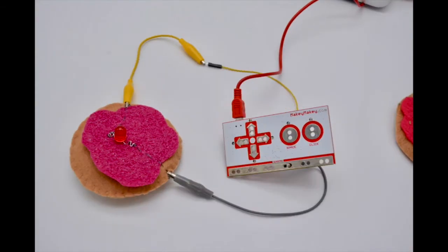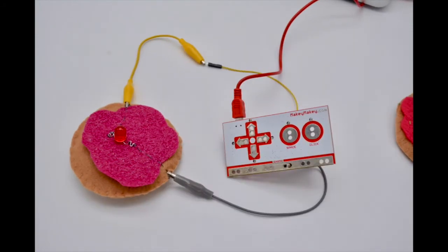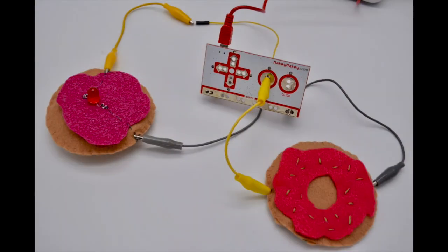To hook it up to Makey Makey, you're just going to hook your LED from key out to the positive leg of the LED and an earth connection to the negative side of the LED. And you're going to hook one side of your doughnut switch to a key press and the other side to earth.